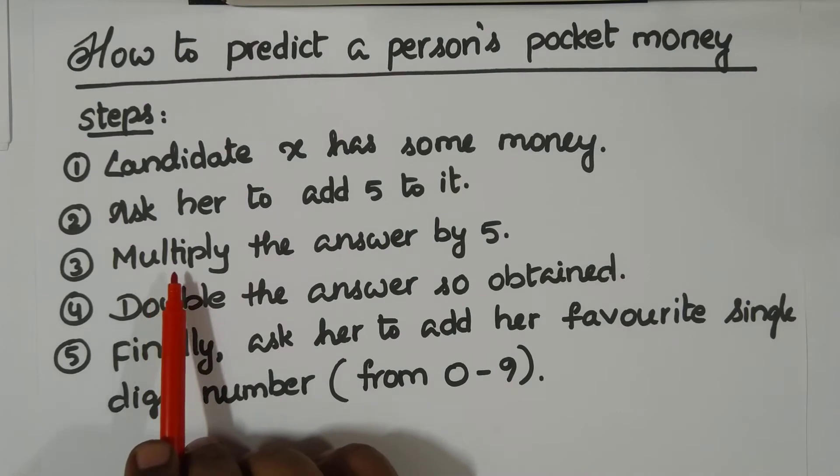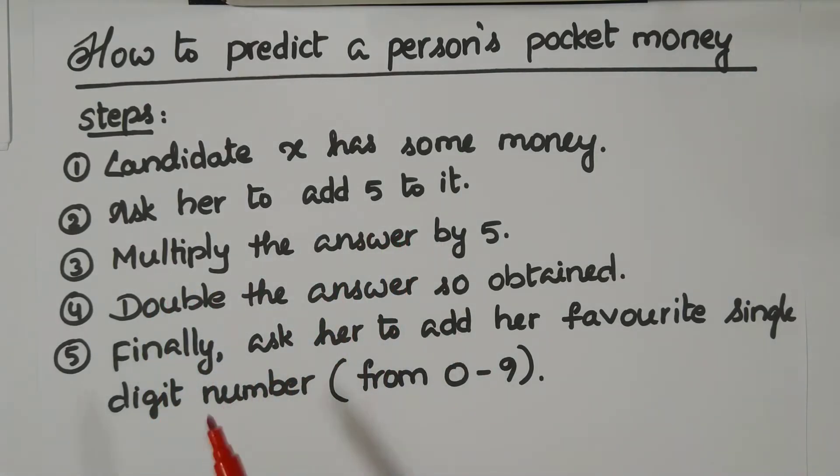Then multiply the answer by five. Then double the answer. Finally, ask them to add their favorite single digit number, anything from zero to nine, single digit number only.